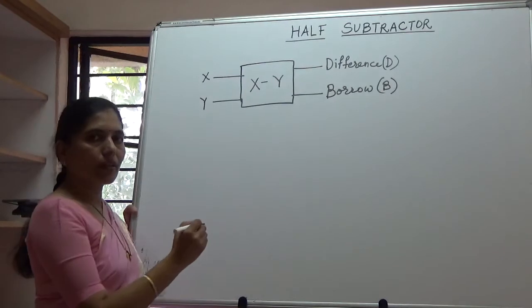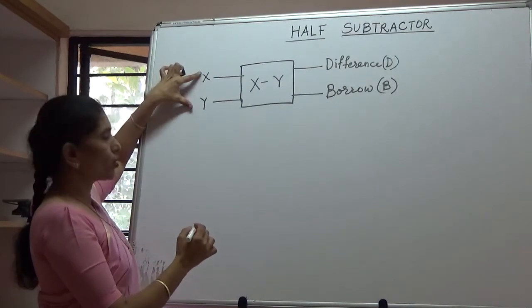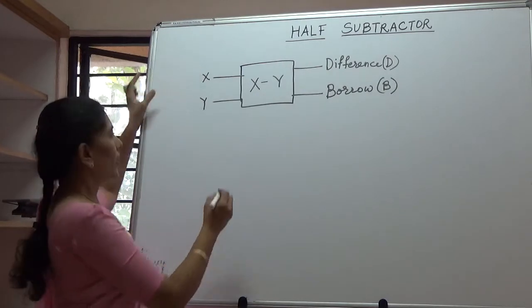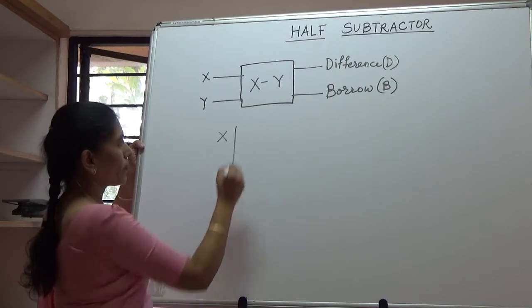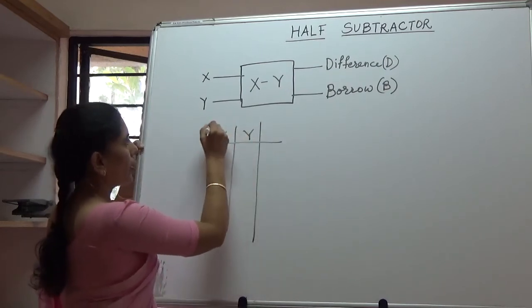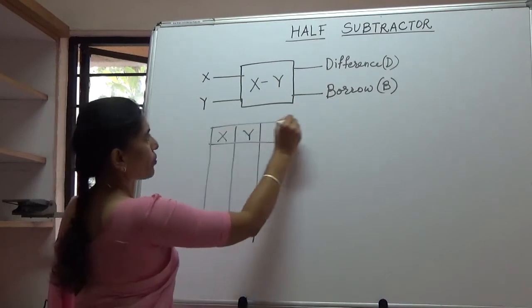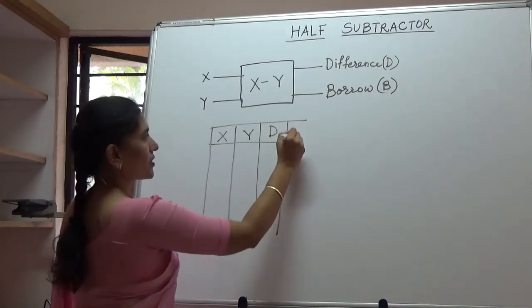Let us write down the truth table for all possible combinations of these two inputs, X and Y. X and Y are the two inputs in the truth table and there would be two outputs, one is the difference and the second is the borrow.